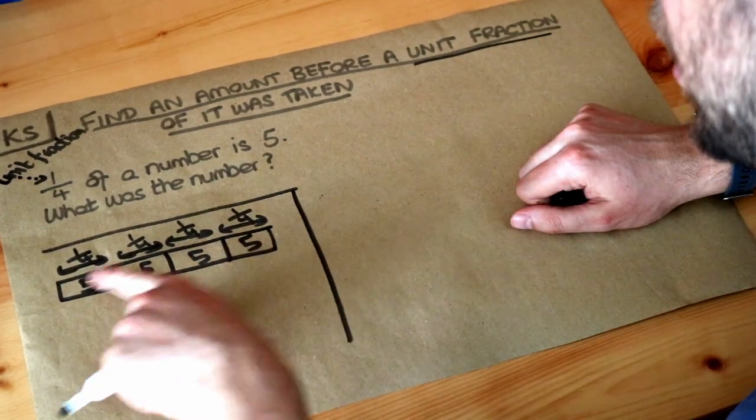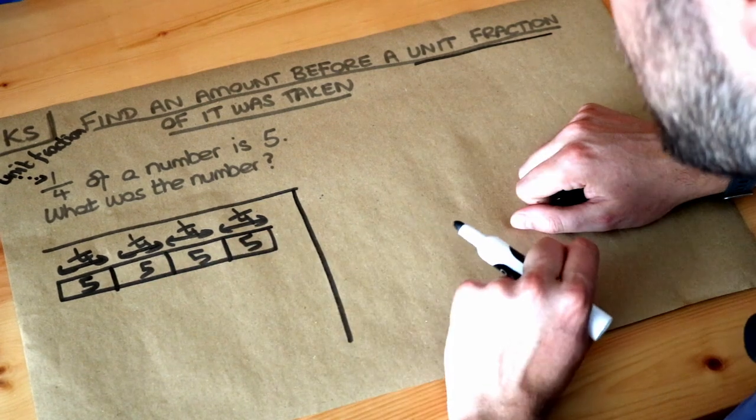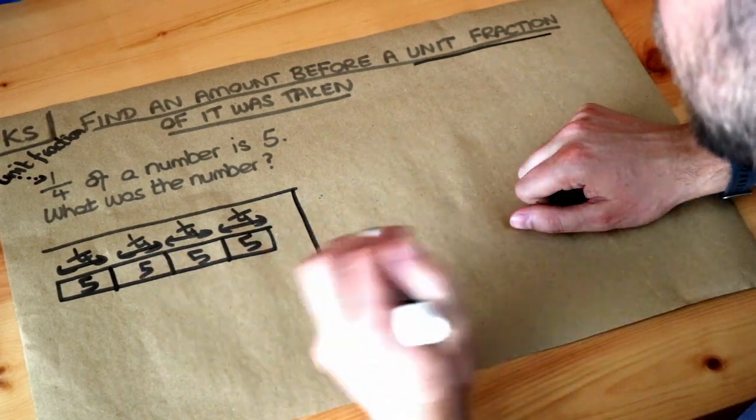So therefore what do we have in total? We can see 5 plus 5 plus 5 plus 5. That is 20. So the answer is 20.